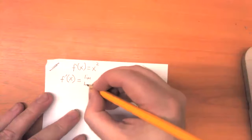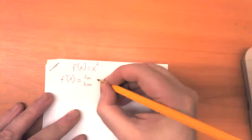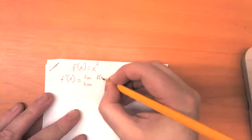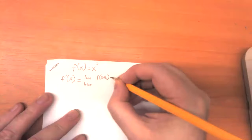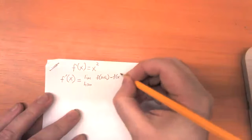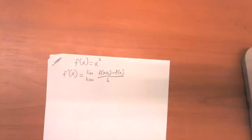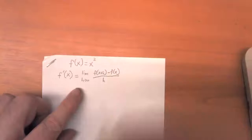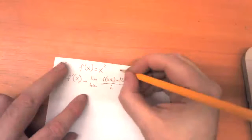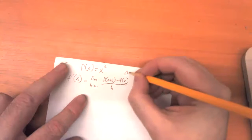This is the limit as h approaches zero of f of x plus h minus f of x, all over h. And this is just our second definition. Sometimes when you see this, instead of this being in terms of x, we might see delta x instead.